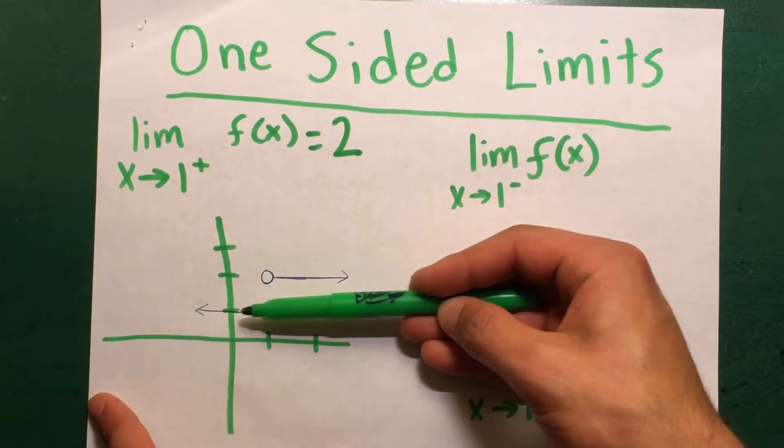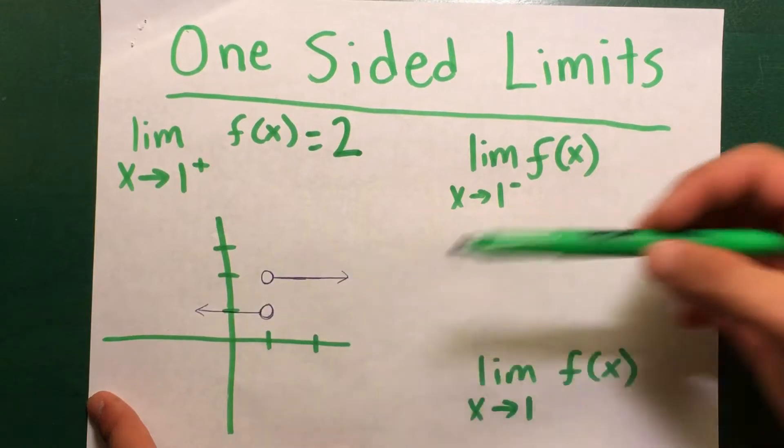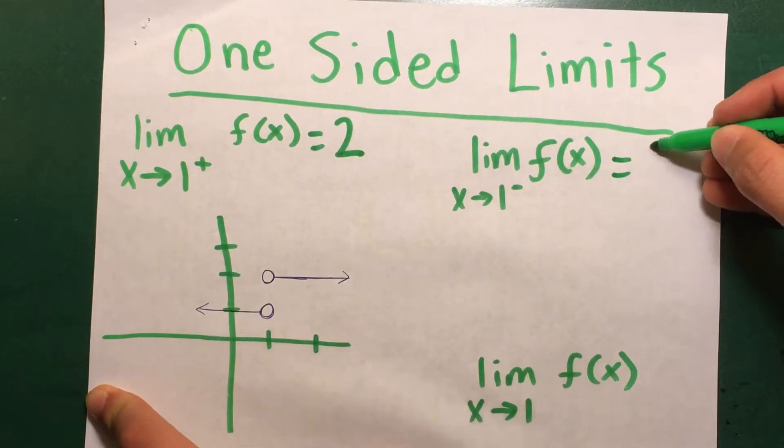This is from the left of 1. We're approaching this area right here which has 1 as its y value. So it's equal to 1.